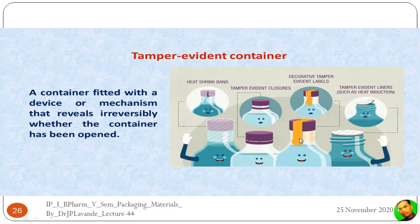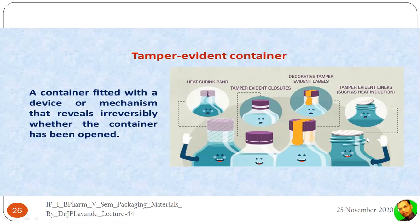Some decorative tamper evident labels are stuck or attached to the container so that if they are not in proper alignment it means the screw cap has been opened — by rotating it to the left, the label gets totally broken, as you can clearly see from the broken cap. There are also tamper evident liners such as heat induction seals, which are applied onto the opening of the container using heat, attach to the surface, and once removed cannot be resealed, confirming that the container has been opened.